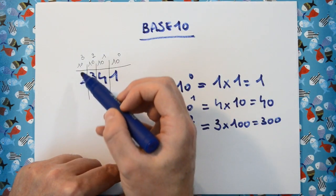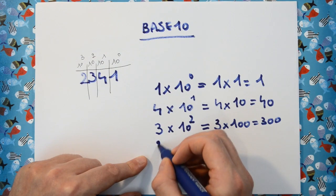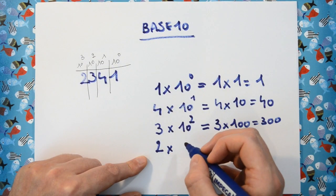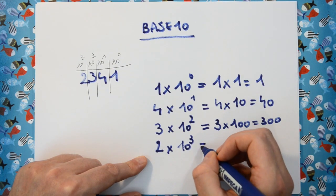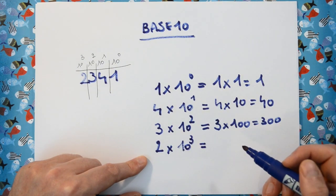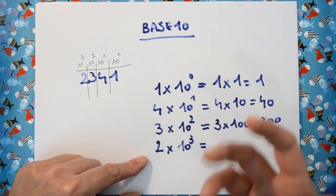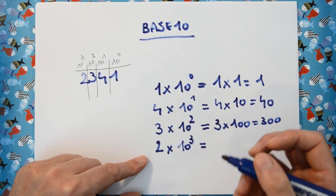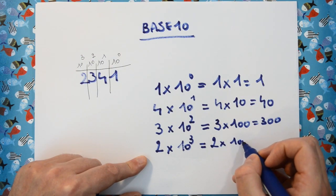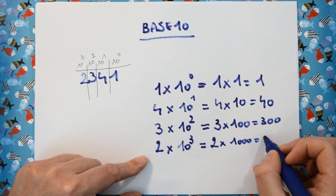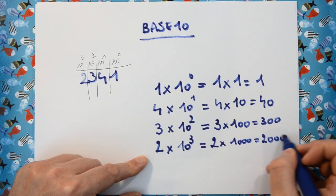And then the last character here, which is a 2, tells us how many times we have 10 to the power of 3. 10 to the power of 3 is 10 times 10 times 10, which is 1,000. So we have 2 times 1,000 equals 2,000.